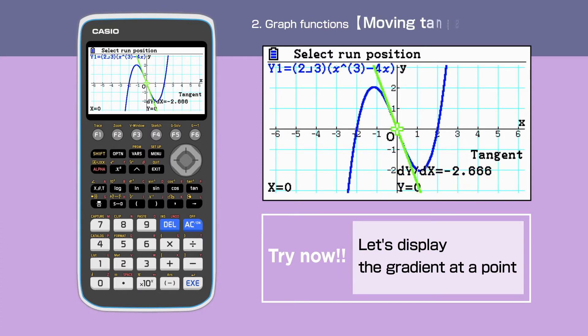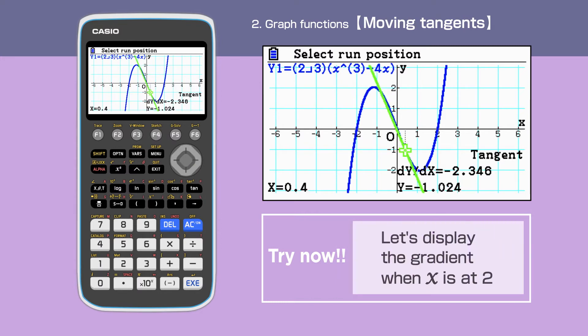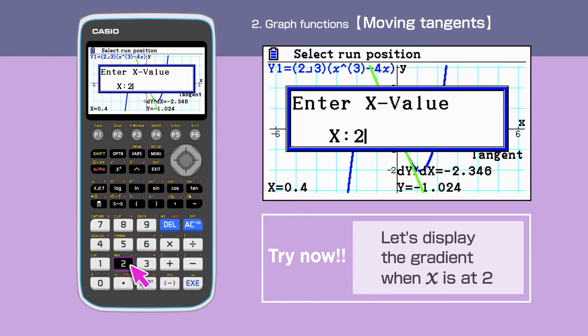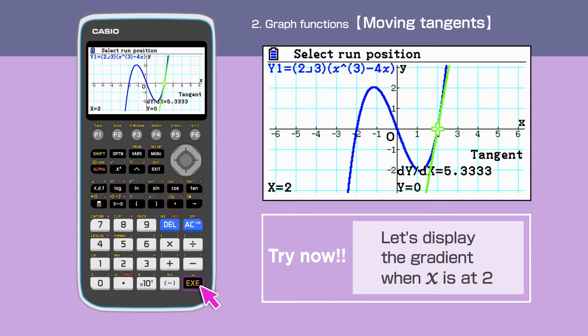The tangent line can be moved along with the original function by moving the cursor. In addition, we can draw a tangent at the specific point when x coordinate is given. Let's draw a tangent when x is at 2. We only need to enter 2 and execute in our calculator. The tangent is drawn at x equals 2.